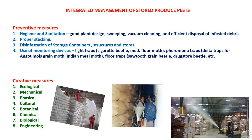Monitoring devices should be used, such as light traps — mainly used for cigarette beetles and flour moths. Pheromone traps are also used, where delta traps are used for grain moth and Indian meal moth, and floor traps are used for Sawtooth grain beetles, drugstore beetles, etc. Under curative measures, various methods are used: ecological methods, mechanical methods, physical methods, cultural methods, botanical products, chemical methods, and biological and engineering structures — all of which will be discussed in detail.